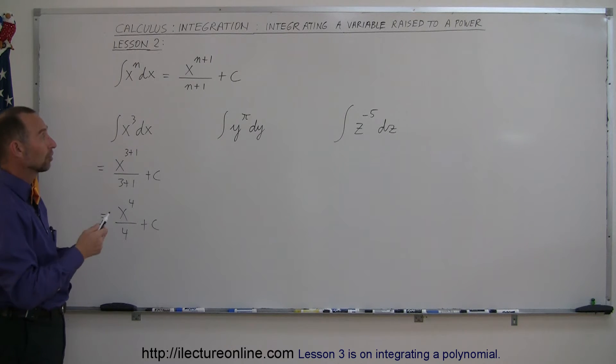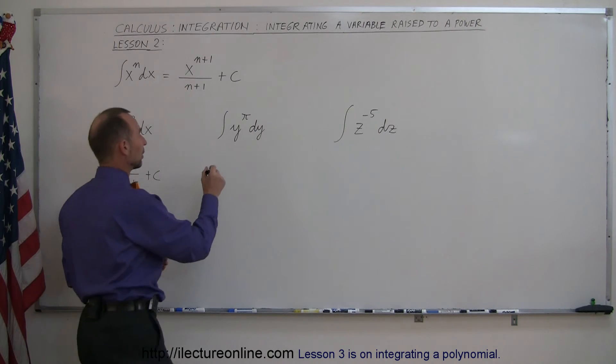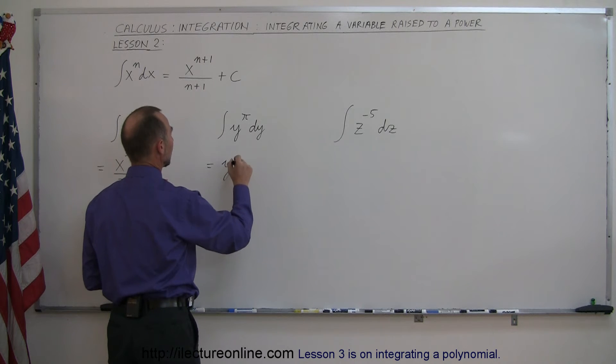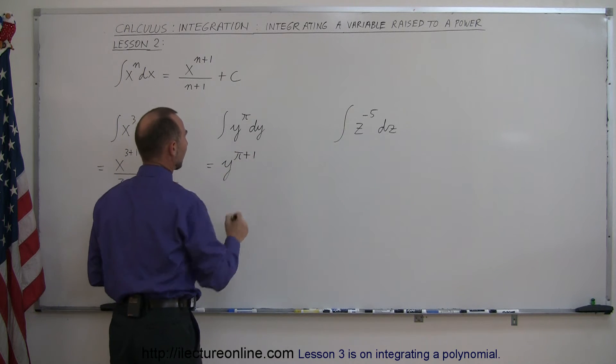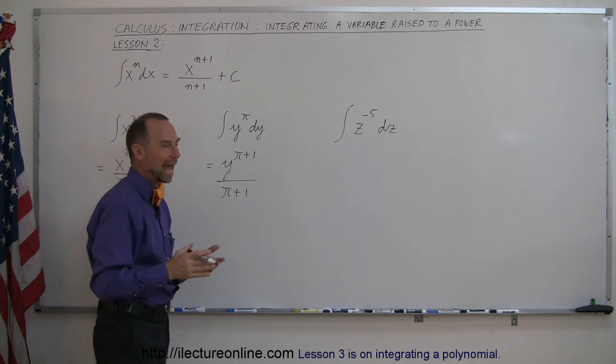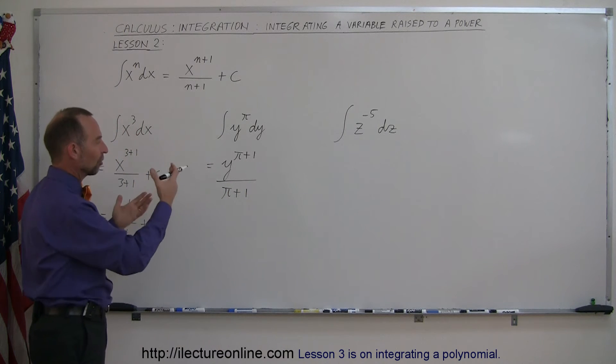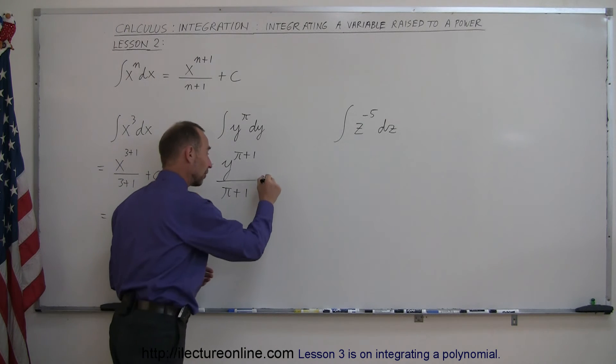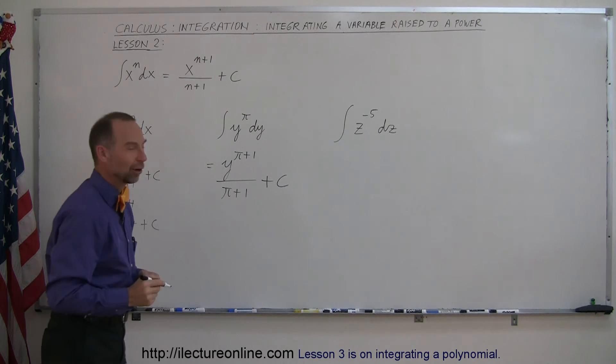Pi is a number, so y raised to the pi power dy. The integral of that is equal to y to the pi plus one divided by pi plus one. Here we cannot readily add one to pi, so we're just simply going to write like that. And don't forget the constant of integration.